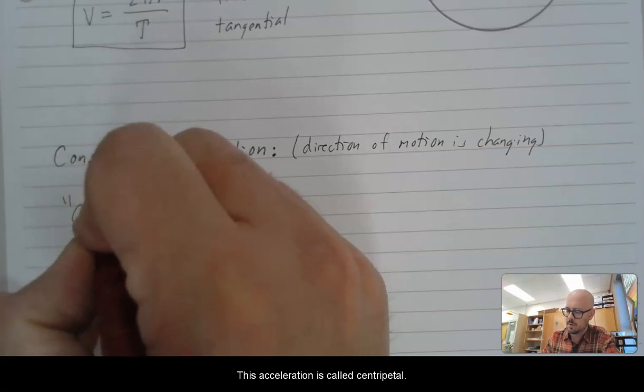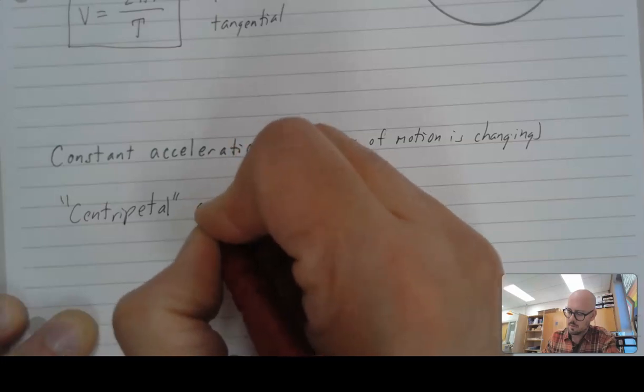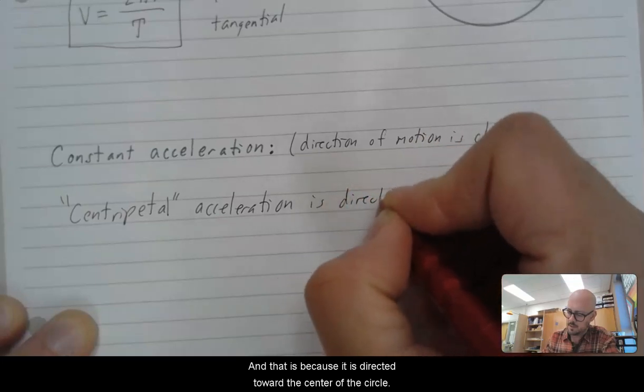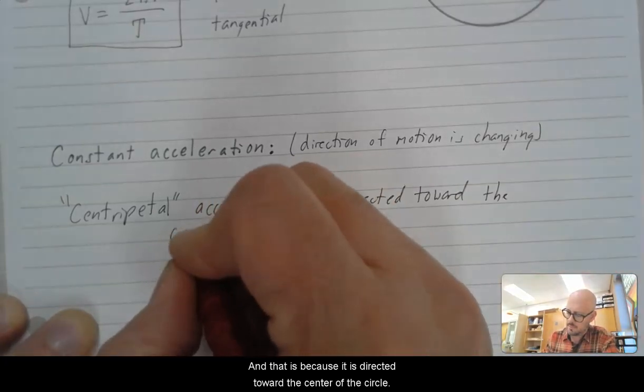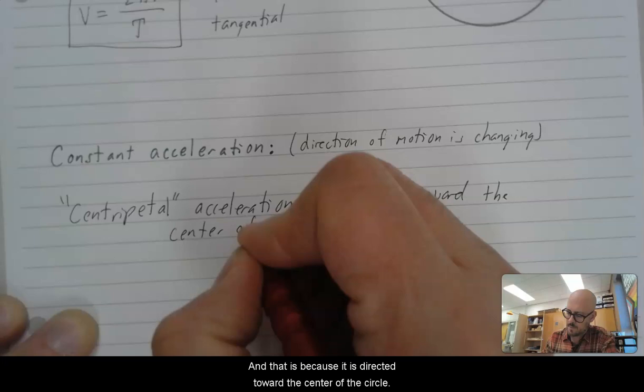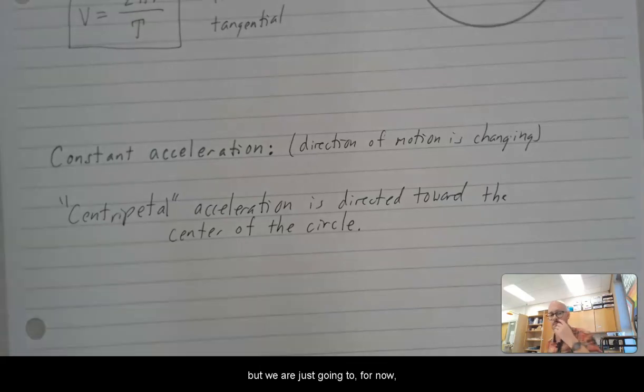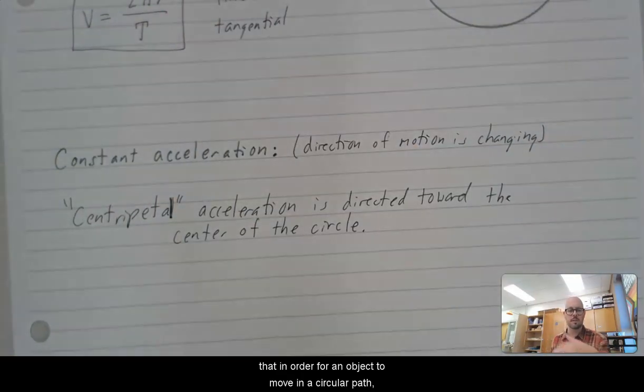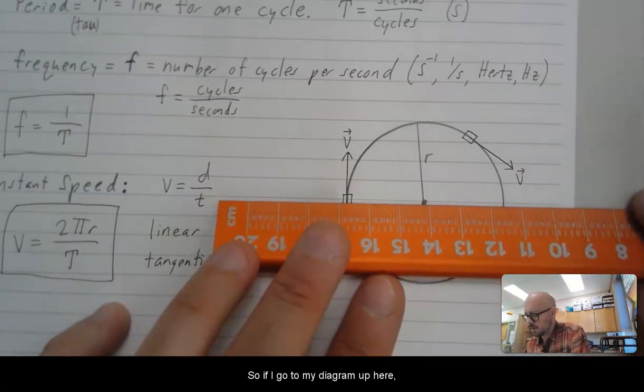This acceleration has a specific name. This acceleration is called centripetal. And that is because it is directed toward the center of the circle. And we're not really talking about why that is, but we're just going to, for now, talk about the fact that it does happen. That in order for an object to move in a circular path, it has to be accelerating toward the center of the circle that it's tracing.